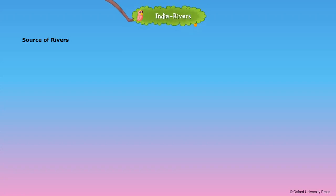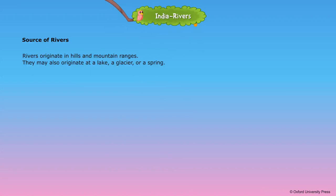Source of Rivers. Rivers originate in hills and mountain ranges. They may also originate at a lake, a glacier, or a spring.